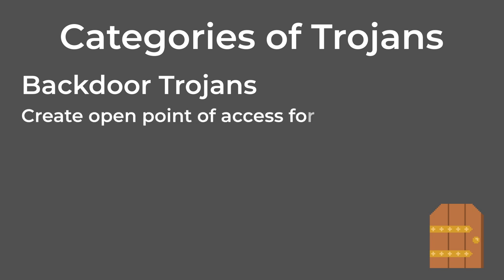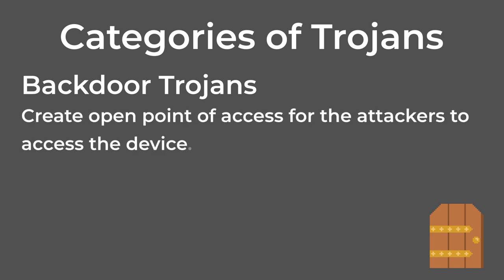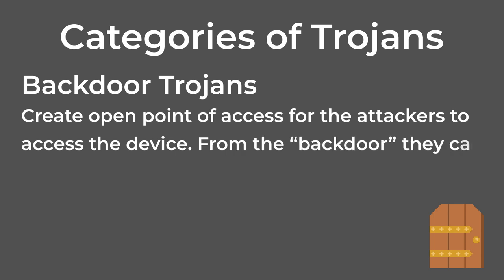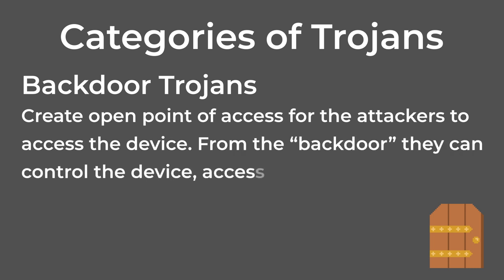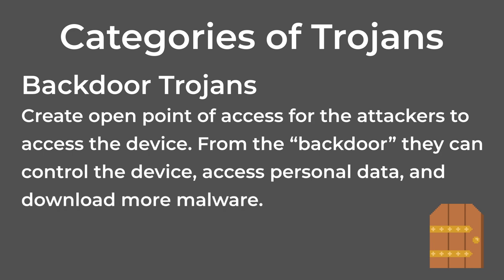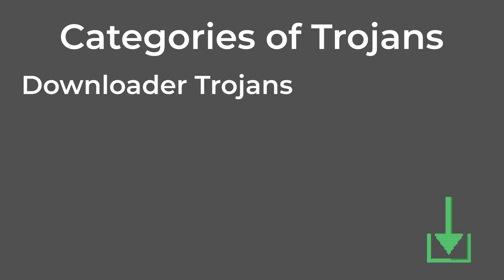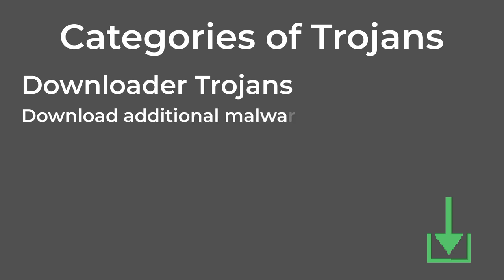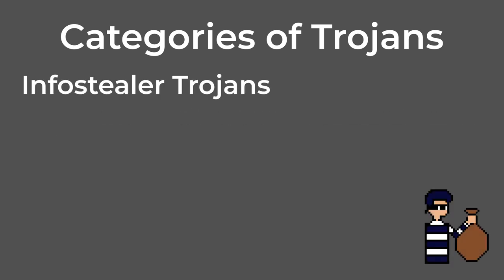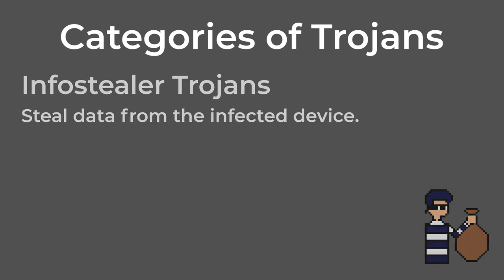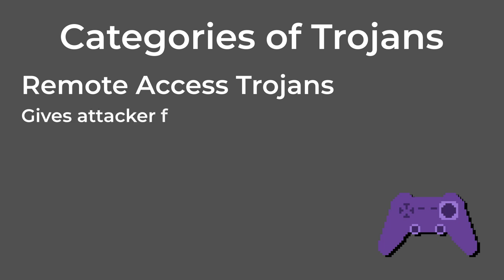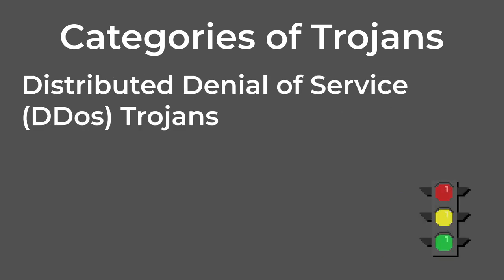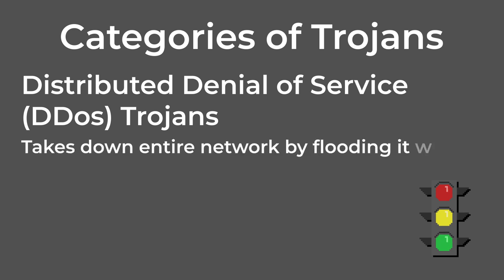The main categories of Trojans are: backdoor Trojans, which create an open point of access for attackers to access the device — from this backdoor, they can control the device, access your personal data, and download more malware onto it. Downloader Trojans, which download additional malware onto the infected device. Info-stealer Trojans, which steal data from the infected device. Remote access Trojans, which give the attacker full control over the device. Distributed denial of service, or DDoS, Trojans, which take down an entire network by flooding it with traffic.